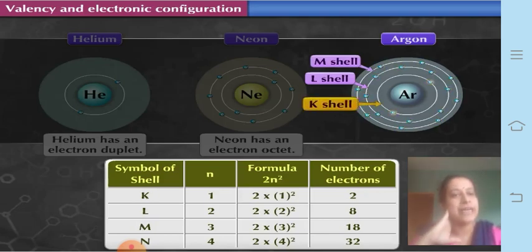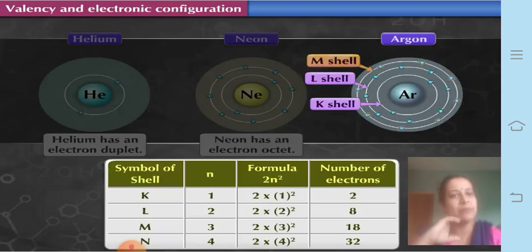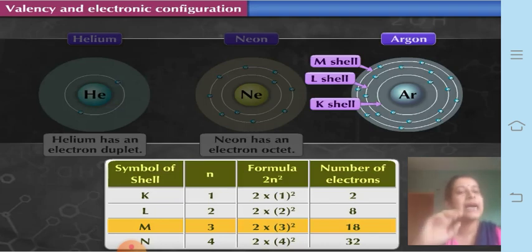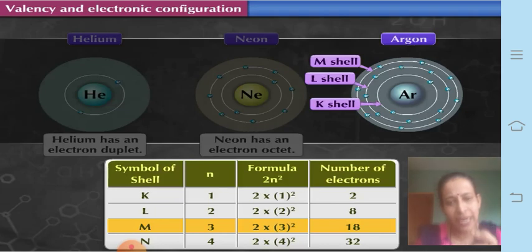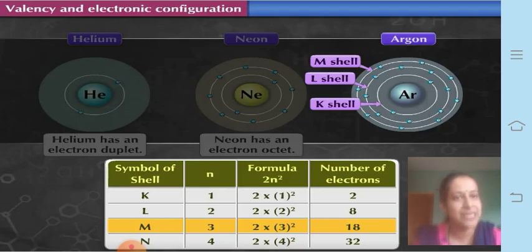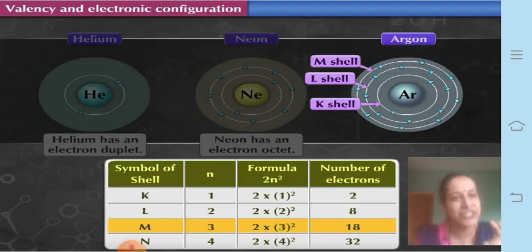Two electrons are accommodated in the K shell at maximum capacity. The L shell also fills to its maximum. The M shell has a capacity of 18 (2 × 3² = 18); however, in the case of argon, we consider the electron octet. Remember: though a shell's capacity might be more than 8, we mostly consider either a duplet or an octet. In the case of hydrogen and helium it is a duplet, whereas for all other elements we consider octet.